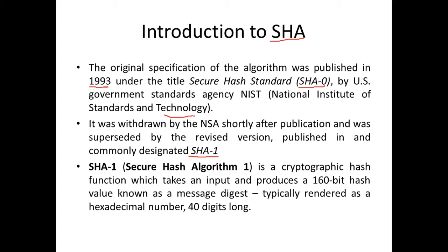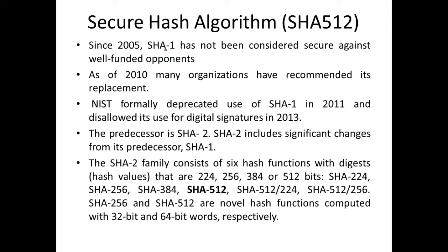SHA-0 was immediately revised and published as SHA-1. SHA-1 takes a variable-length message — if you pass message M to hash function H, the output will be a fixed size of 160 bits, or 40 hexadecimal digits. Each hexadecimal character takes 4 bits, so 40 digits equals 160 bits. This output is known as the hash value or message digest.